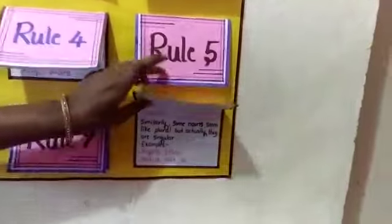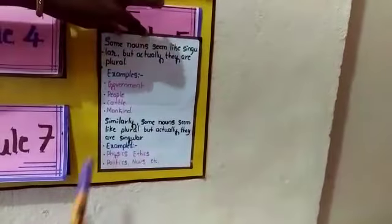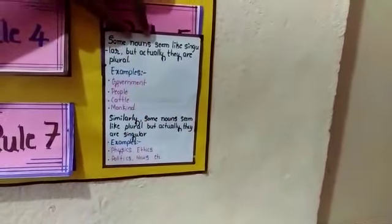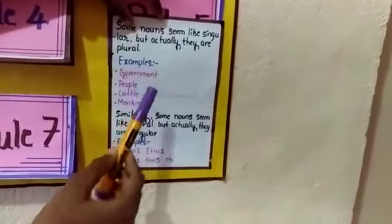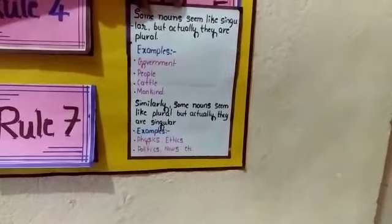Eighth rule: some nouns seem like singular but actually they are plural. Examples: government, people, cattle, mankind, etc.